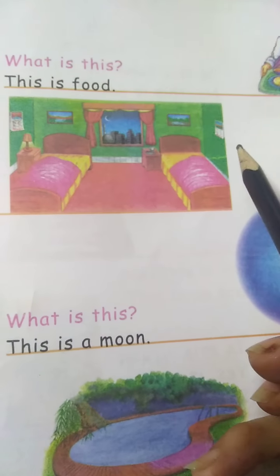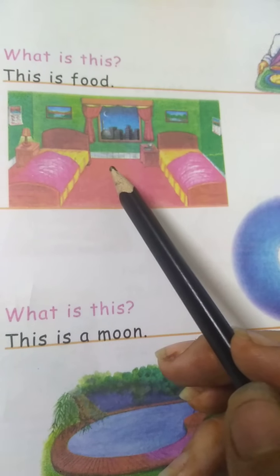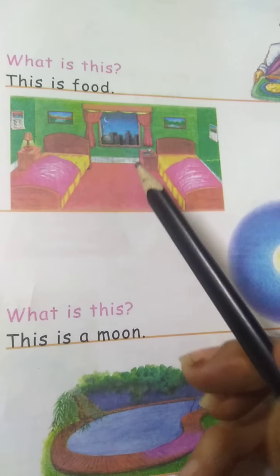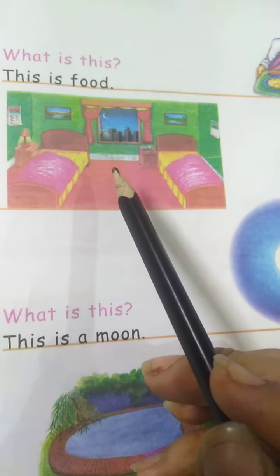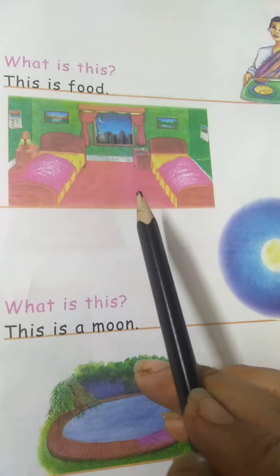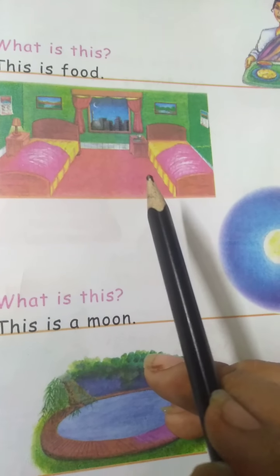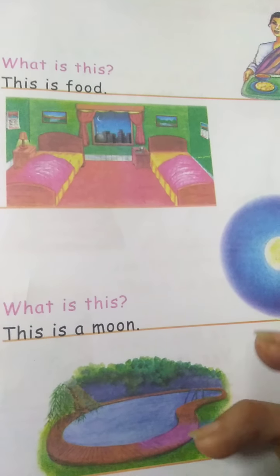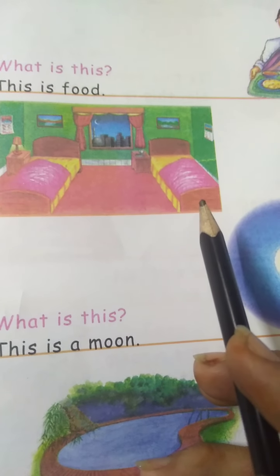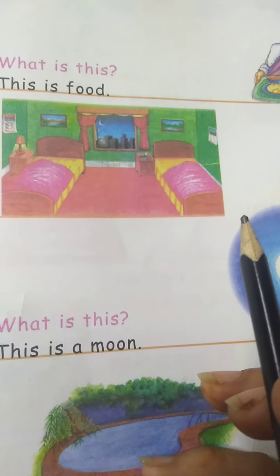Now see, what is this? This is a room. Which room is this — a drawing room? No, this is a bedroom because there are two beds in the room. When there is a bed, we call it a bedroom. This is a bedroom because we use this room for sleeping.